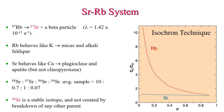The rubidium-strontium system uses the decay of rubidium-87 into strontium-87 plus a beta particle. Rubidium behaves like potassium and goes into micas and alkali feldspar, while strontium behaves like calcium and goes into plagioclase and apatites. The strontium-87 daughter product is typically compared to the strontium-86 stable isotope. One primary use of this system is to determine sources of contamination of igneous rocks through time, though caution is needed because strontium is mobile and hydrothermal alteration can affect the ratio.